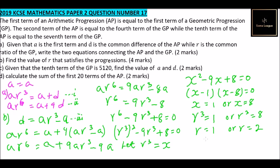Since r = 1 means a constant sequence — multiplying by 1 doesn't change anything, so we would not have a proper geometric progression — we reject r = 1. Therefore r = 2. That is how you find r. We now go to the next part, where we have found r and are given that the tenth term of the GP is 5,120.